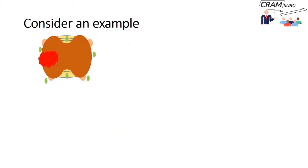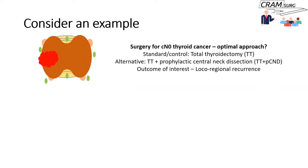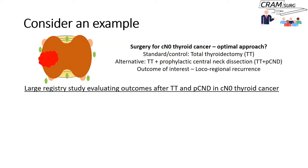Let's talk about an example. Being a thyroid surgeon, I'll use thyroid cancer. If you look at clinically node-negative thyroid cancer, there has been a debate on the optimal approach. Some say total thyroidectomy is sufficient; others say that in addition to total thyroidectomy, you should do a prophylactic central neck dissection to try and reduce local regional recurrence. Let's assume there are no RCTs addressing this, and you have access to a large registry of thyroid cancer patients who have undergone surgery.